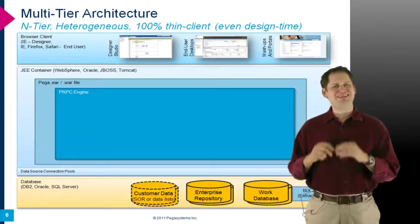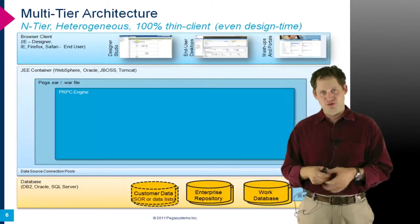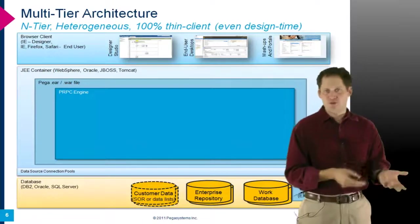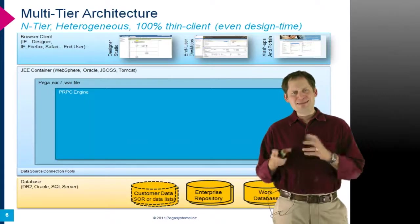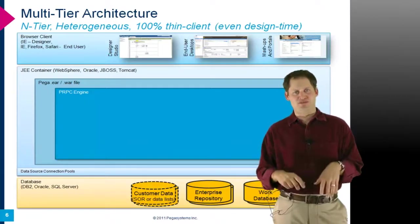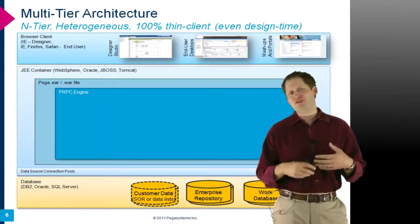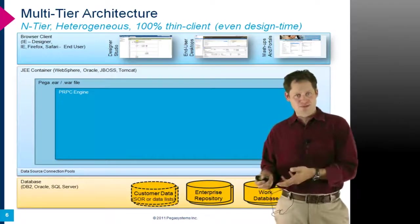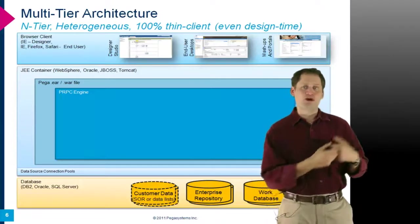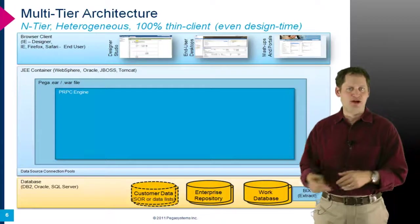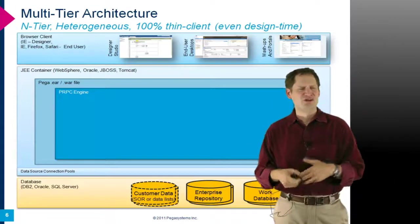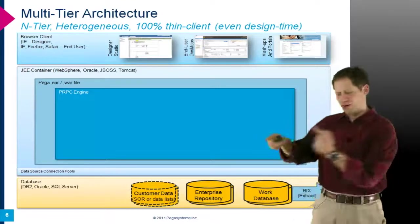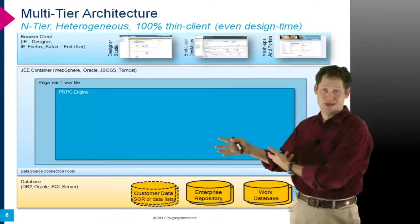PRPC is a JEE-architected, Java-based application. At the bottom is a database layer — Oracle, DB2 on distributed systems or mainframe, or SQL Server. Inside that database we store two types of assets: the enterprise repository, which is the definition of business processes, rules, screens, and interface points; and the work database, which holds processes in flight or cases — process state information, business data, audit history, artifacts and attachments either stored locally or via a pointer to an enterprise content management system like FileNet or Documentum.